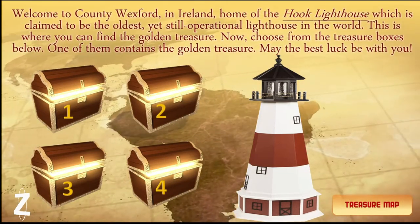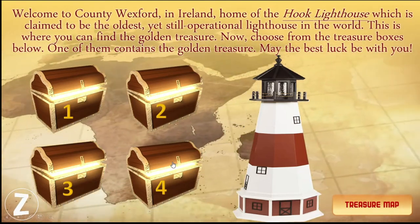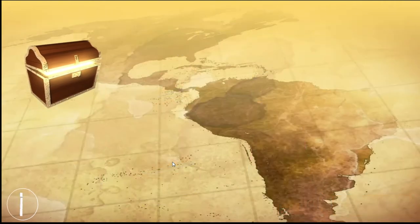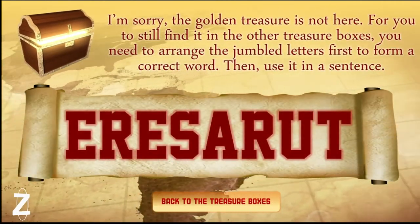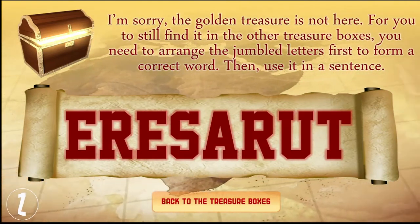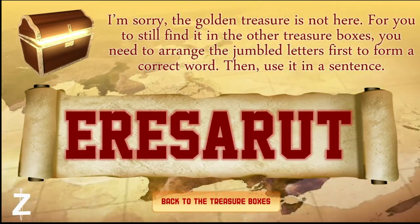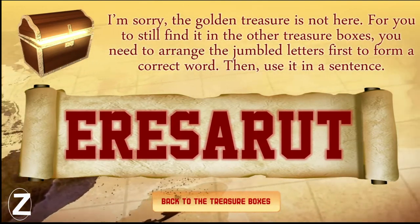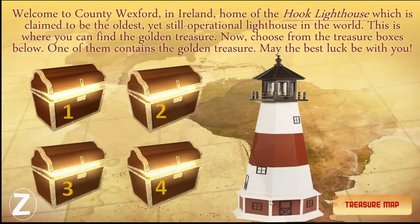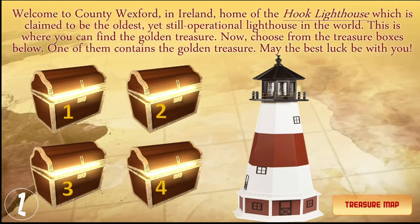Since the student is still unable to find the hidden golden treasure, let's choose another one — let's choose treasure box number four. Let's see if it is inside this treasure box. I'm sorry again — the golden treasure is not in here. The same task: the student will have to rearrange the jumbled letters, and if he or she gets the right word, they need to use it in a sentence. Then go back to the treasure boxes. We only have two treasure boxes left — number two and number three.